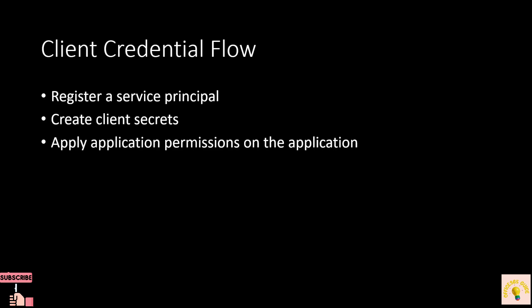With client credential flow, the application works independent of any user credential. Instead it uses the secret for authentication and the application permissions for authorization to get the desired result. Once we have all these things, we can use the client secret to connect to the Graph API. So we'll start by registering the application.